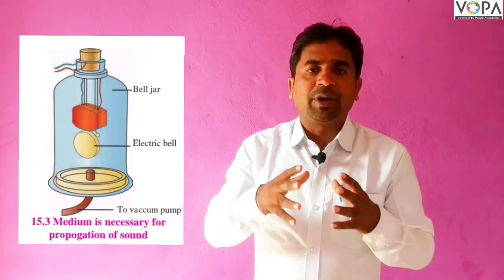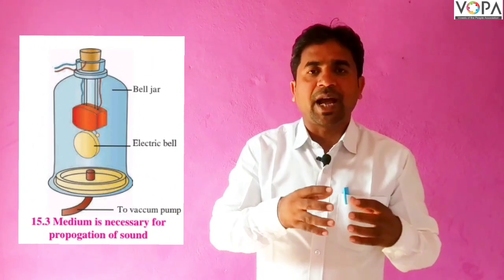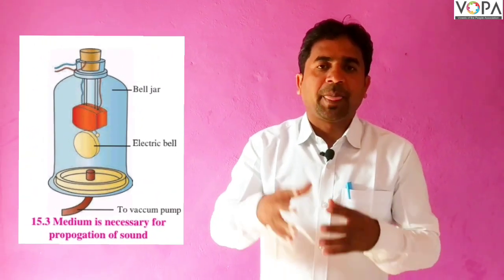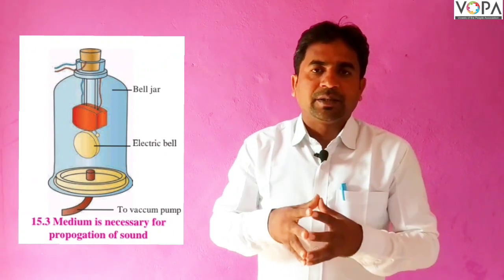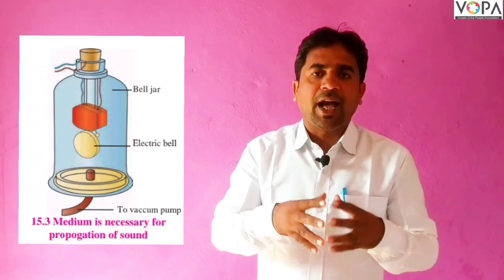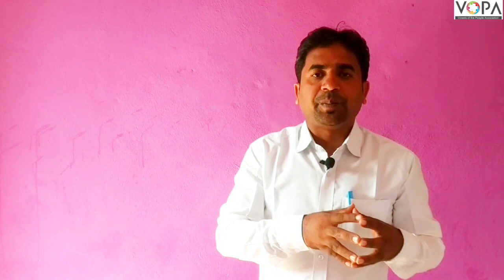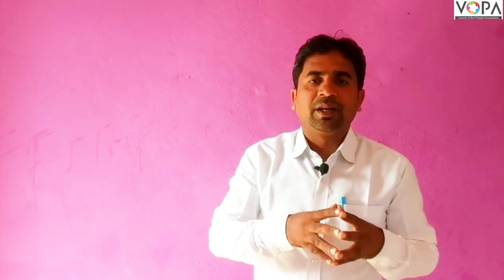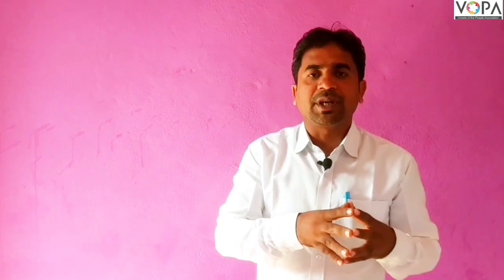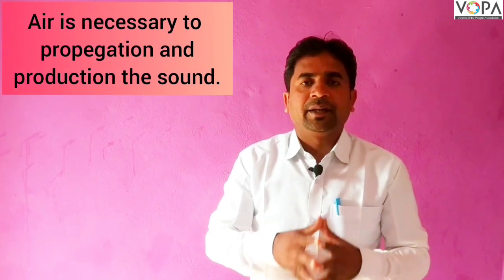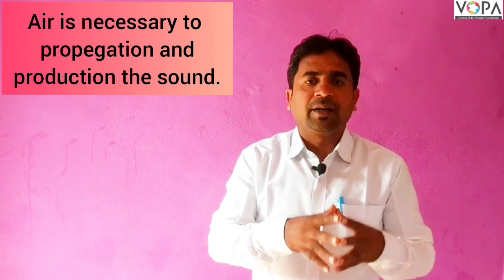At the start of the experiment, air is present in the bell jar since the vacuum pump is off. Switch on the electric bell — the ringing sound is heard. Now the vacuum pump starts, removing air from the bell jar. As the level of air decreases, the sound level also decreases. From this, we can say that air is necessary for the propagation and production of sound.